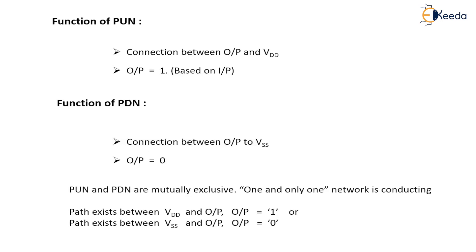In other words, if my output is one, there exists a path between VDD and the output. If my output is zero, there exists a path between VSS and the output. So pull-up network, pull-down network — PMOS and NMOS together — are what we call a CMOS circuit. In the next video you will be learning about static CMOS and the various different design styles. Thank you.